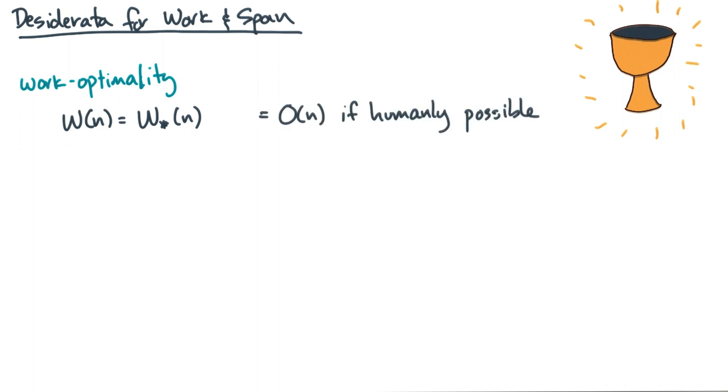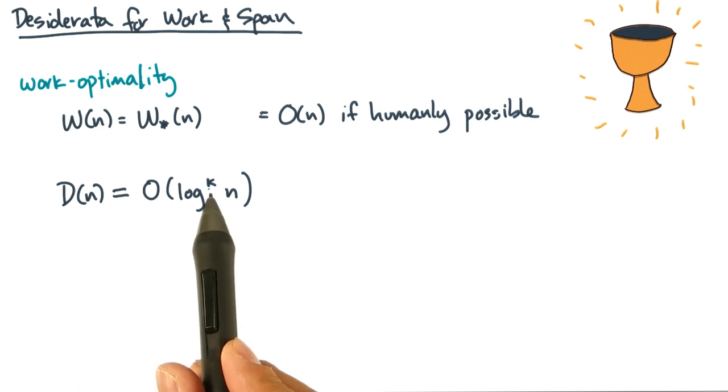So what's the holy grail for span? I'm always going to ask you to find algorithms with polylogarithmic span. Polylogarithmic means log n to some power.